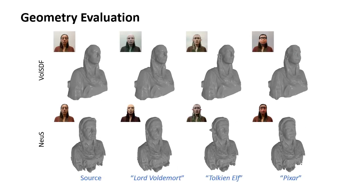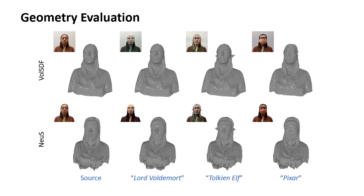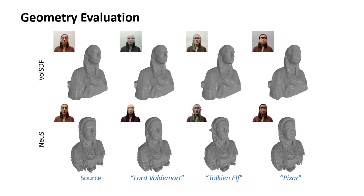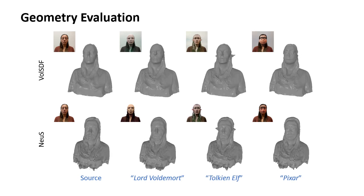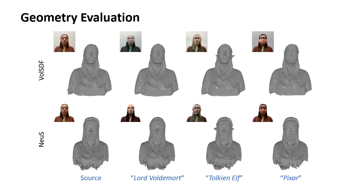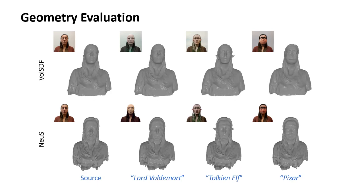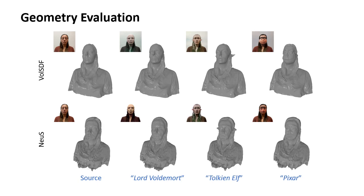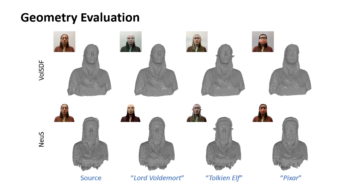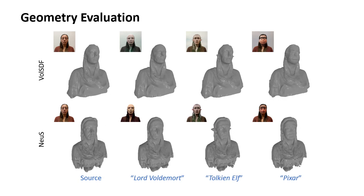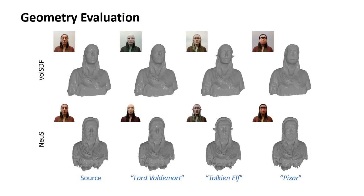To evaluate whether the geometry will be correctly modulated in the stylization process, we show the geometry evaluation results. We extract meshes using marching cubes before and after the stylization and report results on two widely used Nerf-like models, VolumeSDF and Noose. We clearly see geometry changes — for example, Lord Voldemort flattens the girl's nose, Tolkien Elf sharpens the girl's ears, and Pixar rounds the jaw.